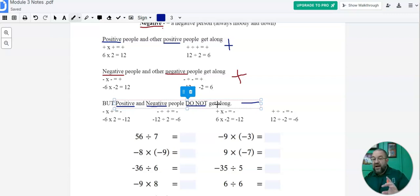So really, really simple rules when you really think about it. If I have two of the same, it's going to be positive. If I have one of the same and one is different, it's going to be negative.